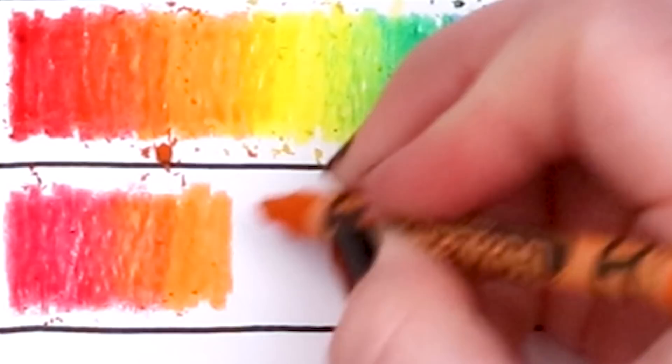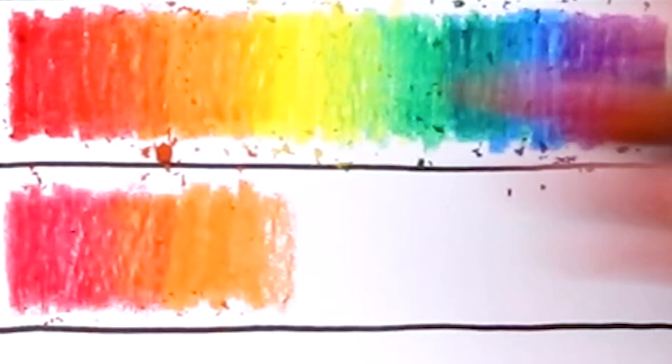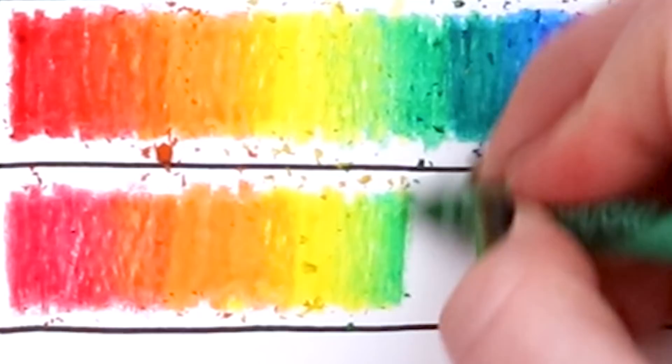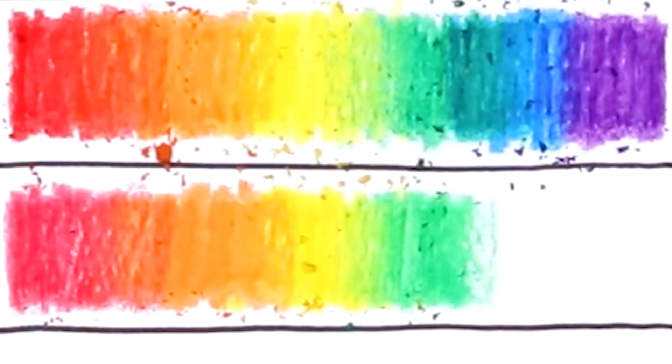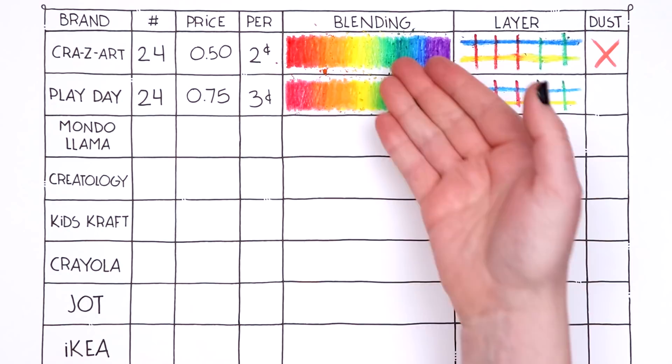A big chunk just fell off the orange. Something tells me it is not going to pass the dust test. I will say the weird transparency lack of color does make it easier to blend. It didn't smudge as much as our Crazy Art, but I can't get over the pigmentation difference. That's insane. Obviously with chunks of crayon falling off, I cannot let it pass the dust test.